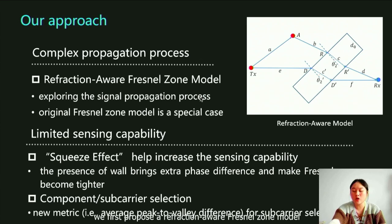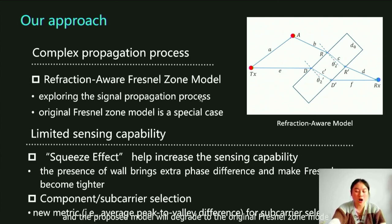In response to the above challenges, we first propose a refraction-aware wireless sensing model to characterize the propagation law of wireless signals in through-wall scenes. Our proposed model will degrade to the original Fresnel zone model. We found that the presence of a wall does not simply reduce the wireless signal sensing capability, but can bring some benefits in certain cases.